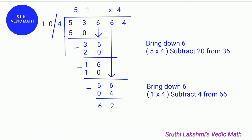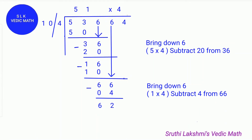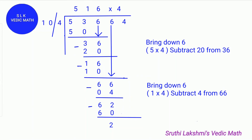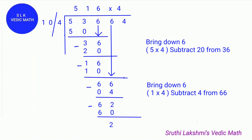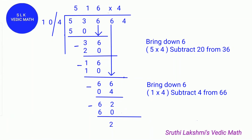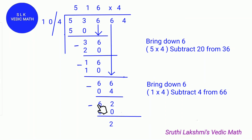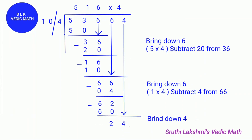Next we do the last digit of quotient times the last digit of divisor: 1 times 4 is 4. So we do 66 minus 4, which equals 62. Next we find how many tens can fit in 62. Six tens can fit, so we write 6 on the quotient line. We do 10 times 6, which equals 60. Then 62 minus 60 equals 2. Next we bring down the 4.